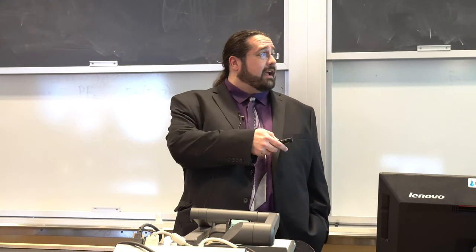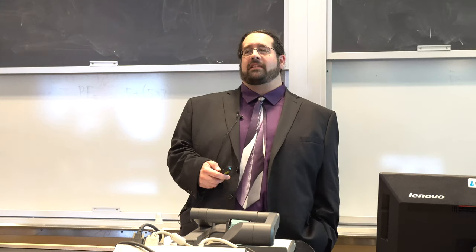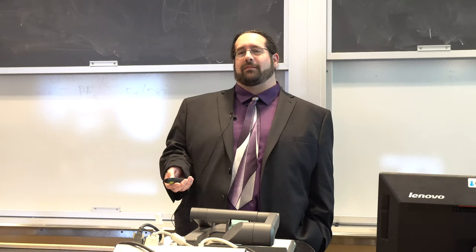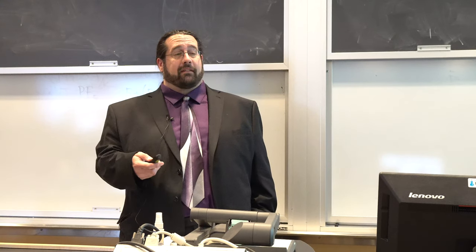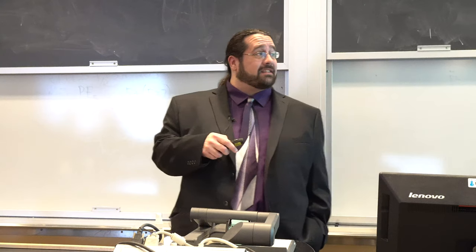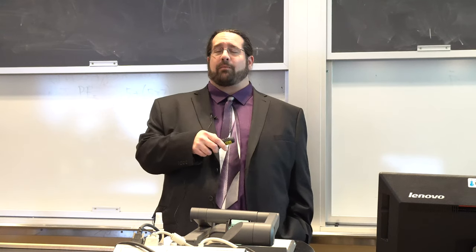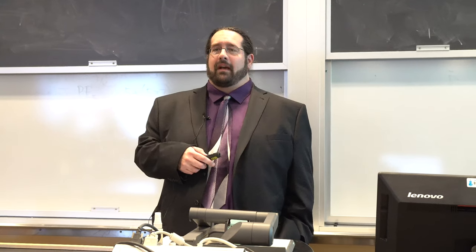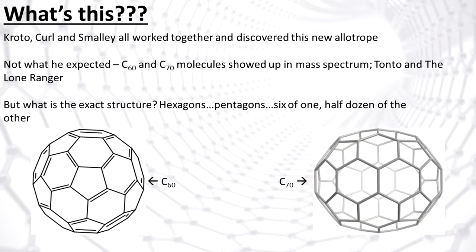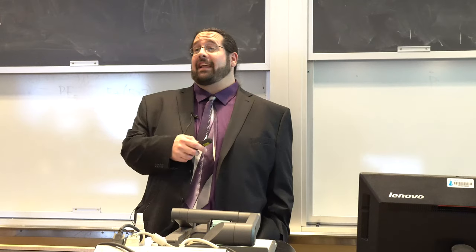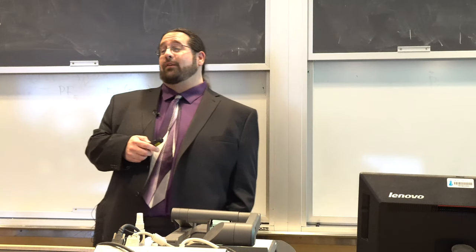He contacted them and it took a little convincing — they weren't very receptive to blasting a piece of graphite — but luckily they went ahead and discovered a new allotrope of carbon, seen here. The mass spectrum from the AP-2 apparatus showed two peaks, one at C60 and one for C70 molecules that they nicknamed Tonto and the Lone Ranger.